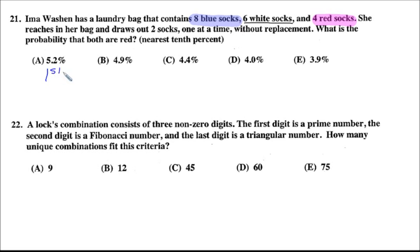So on our first draw, because we treat these like separate events, it says what's the probability that both are red, but we'll treat them like separate events and then we'll multiply. So on our first draw, there's a chance of drawing a red sock. Four out of eighteen. That reduces to two ninths.